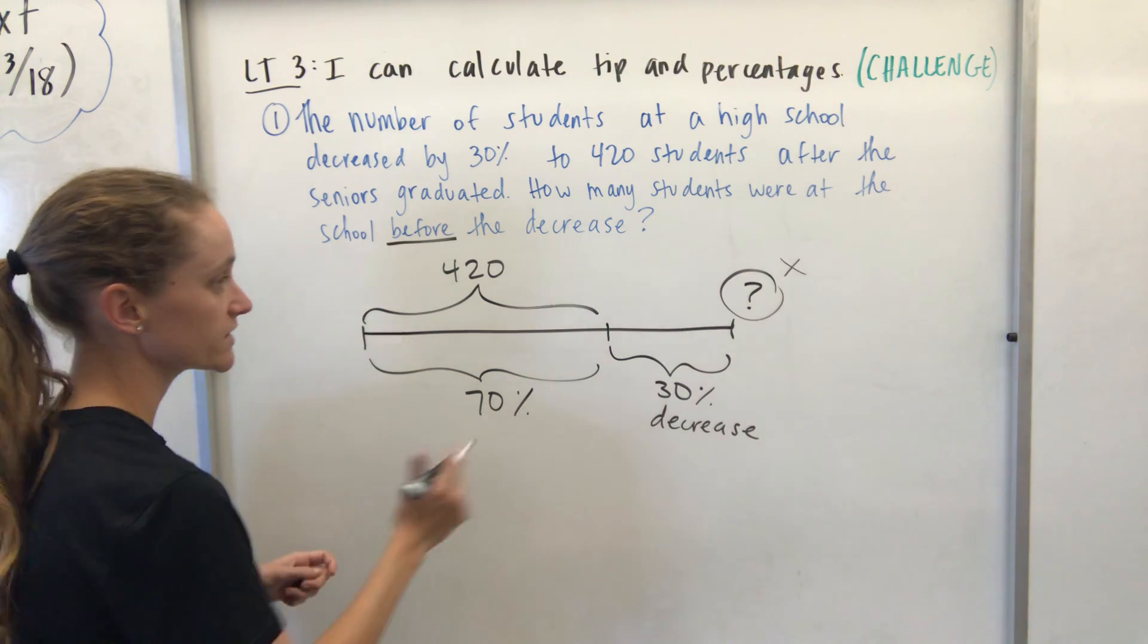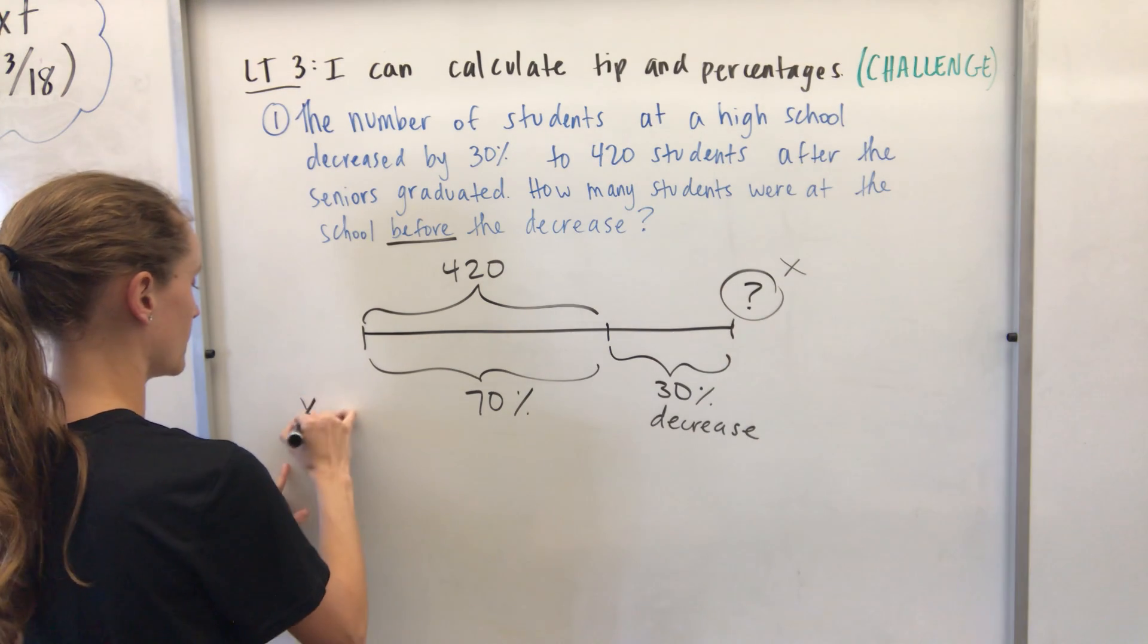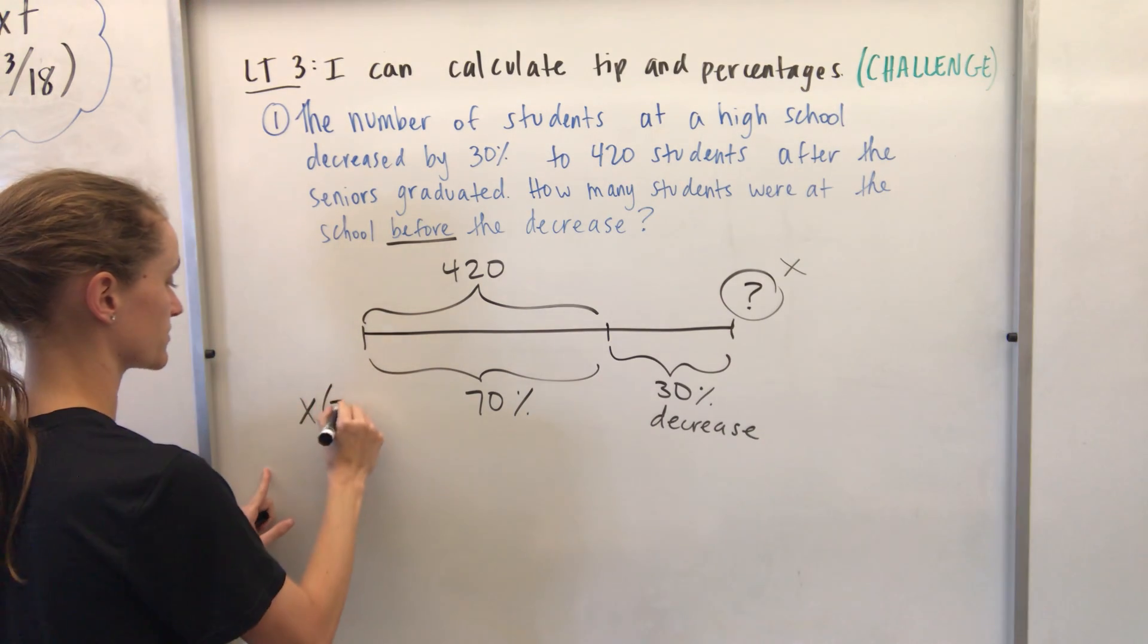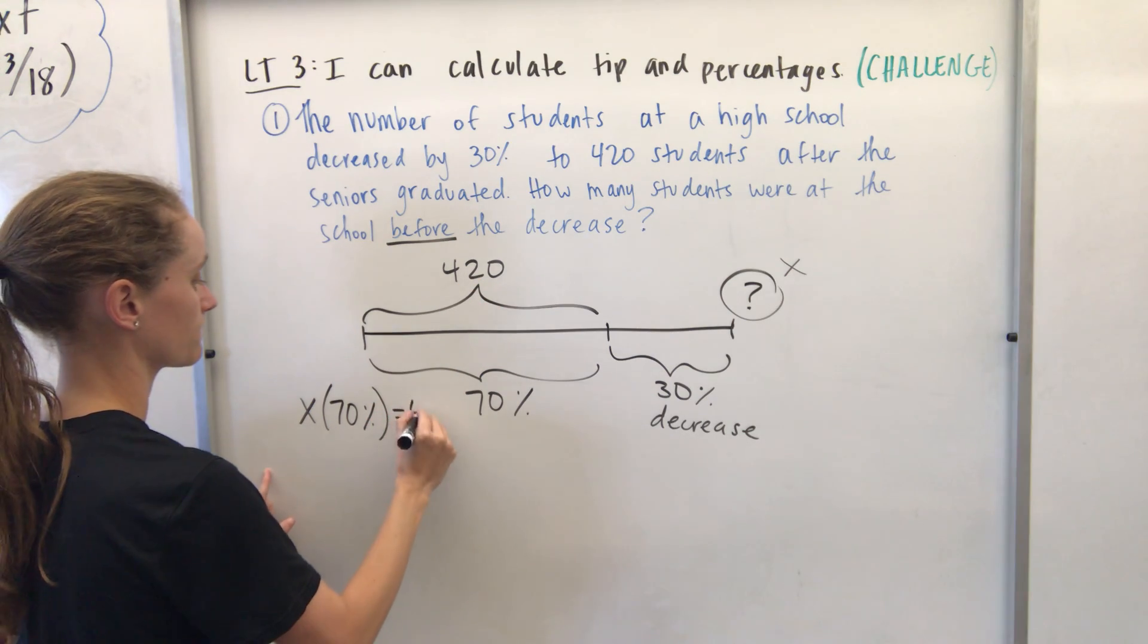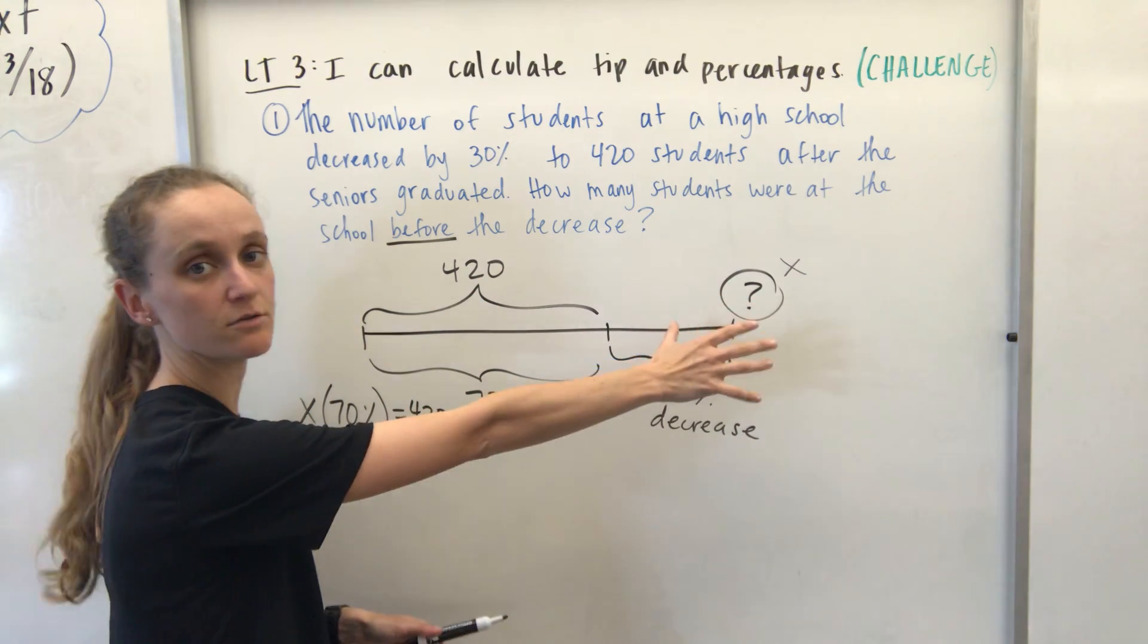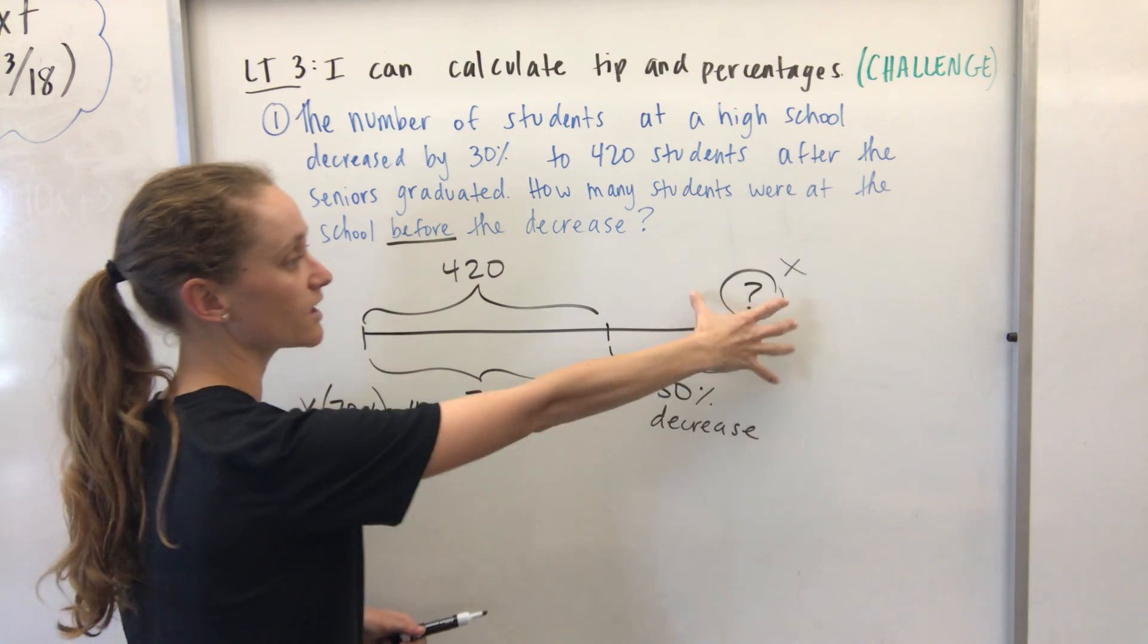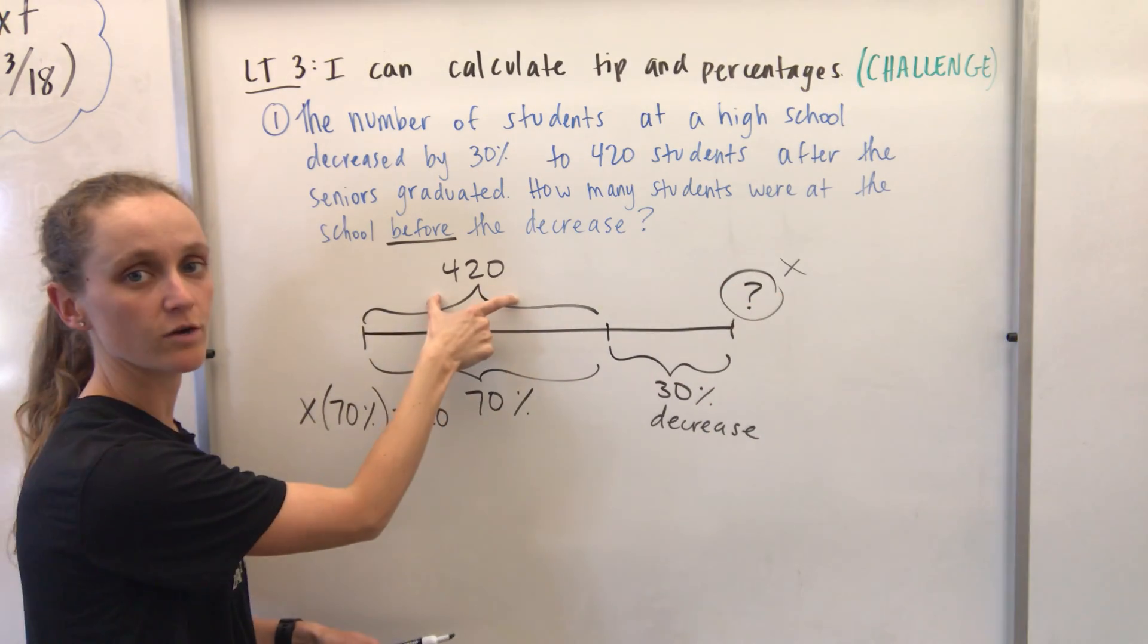So I know that if I take the whole, the X over here, and I multiply that by 70%, that's going to give me this number. So I'm taking some number I don't know. I'm taking 70% of that number, and I'm trying to get 420.